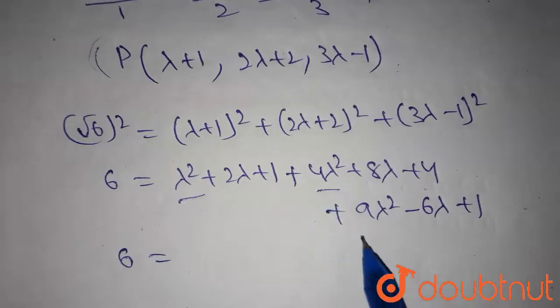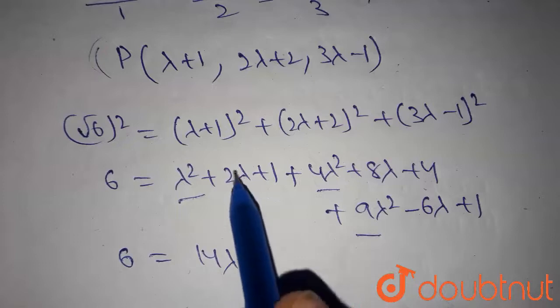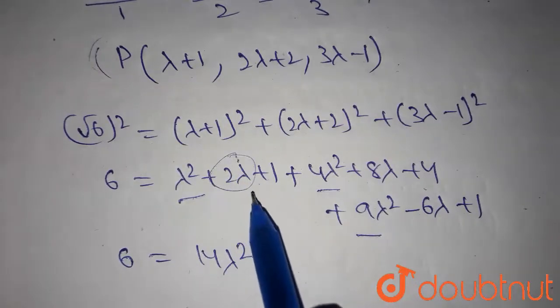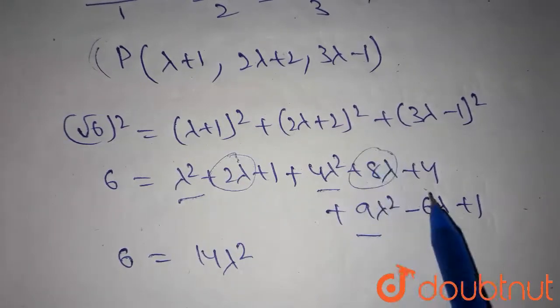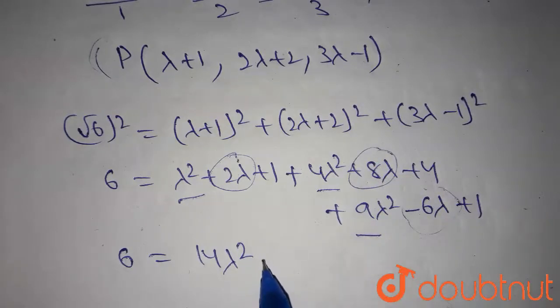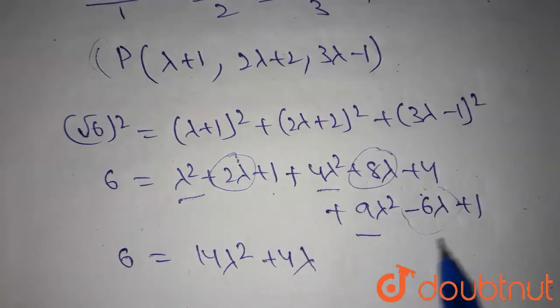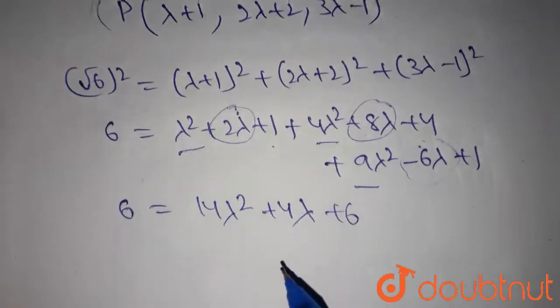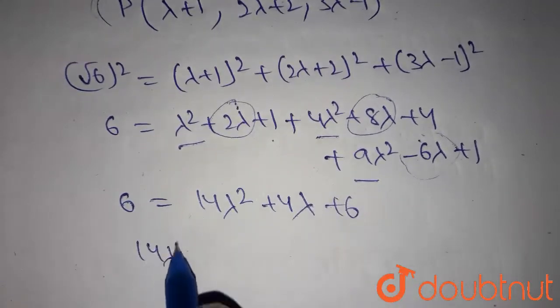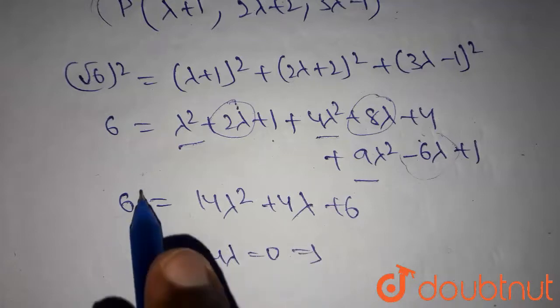Here 4 lambda square, here 9 lambda square, that's 14 lambda square. Here 2 lambda, 8 lambda, minus 6 lambda, which is nothing but 4 lambda. Here 1 plus 4 plus 1 equals 6. Then we get 14 lambda square plus 4 lambda equals 0, this 6 and 6 cancel out each other.